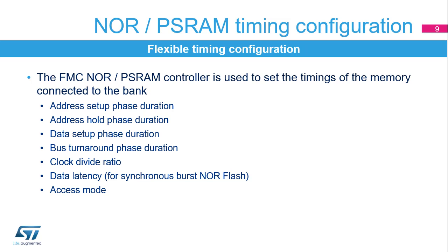The NOR/PSRAM controller allows the configuration of various timing parameters for the supported memories: address setup phase (duration of the first access phase), address hold phase (duration of the middle phase of the access cycle), data setup phase (duration of the second access phase), bus turnaround phase, clock divide ratio (number of AHB clock cycles within one memory clock cycle), data latency (number of clock cycles to be issued to the memory before the first data transfer), and access mode.